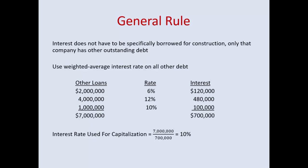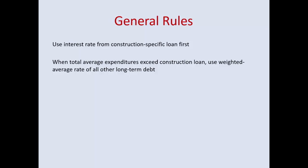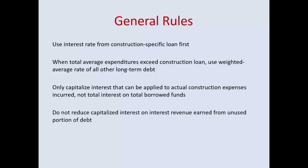For the interest rate used for capitalization: if other loans total $7 million with $700,000 in total interest, the capitalization rate is 10%. Always use the interest rate from a construction-specific loan first. When total average expenditures exceed the construction loan, use the weighted average rate of all other long-term debt. Only capitalize interest that can be applied to actual construction expenses incurred, not the total interest on total borrowed funds. Capitalized interest should never exceed actual interest costs. That is a summary of interest capitalization rules.